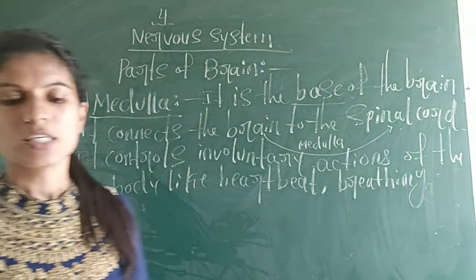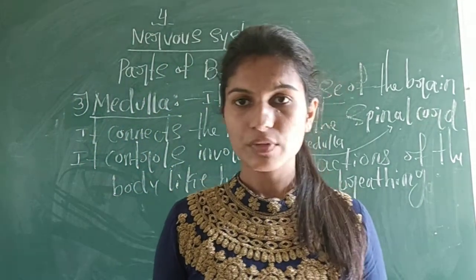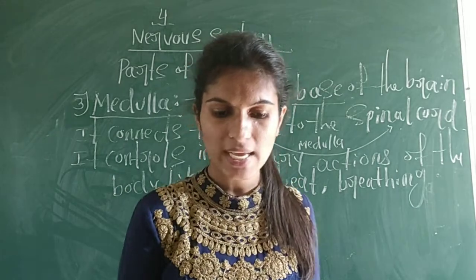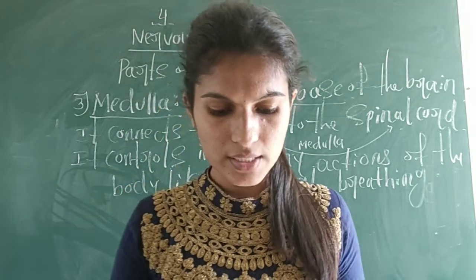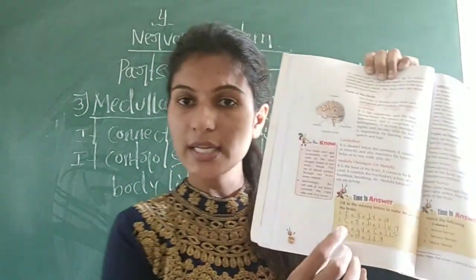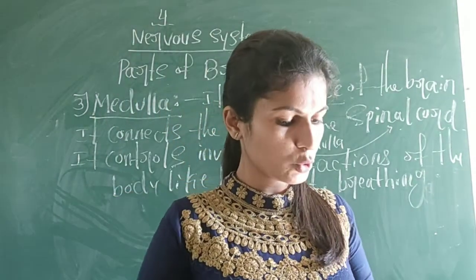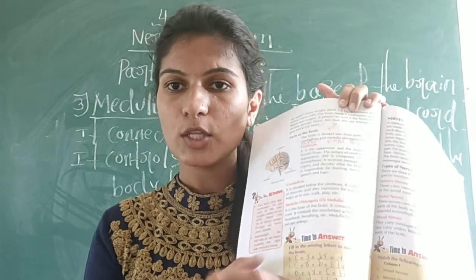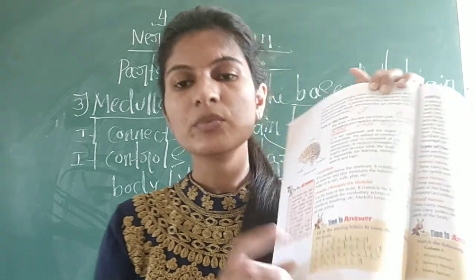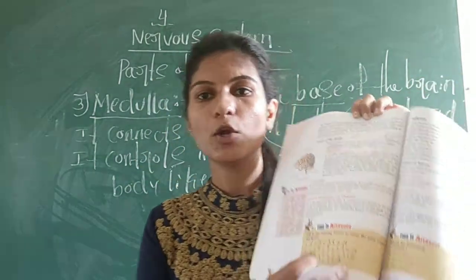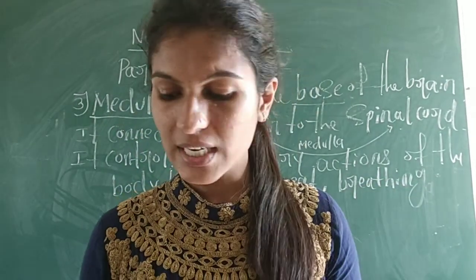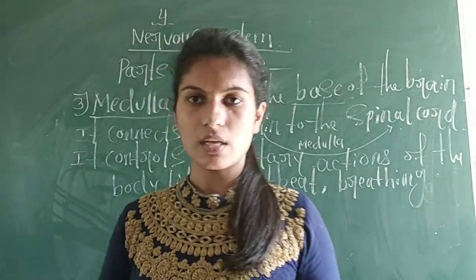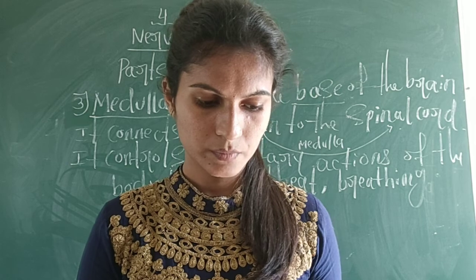So in today's class we learned the parts of the brain: cerebrum, cerebellum, and medulla — also called oblongata. For homework, go to page number 166 and fill in the missing letters to name the parts related to the brain. In tomorrow's class we will start studying about nerves and types of nerves. Thank you.